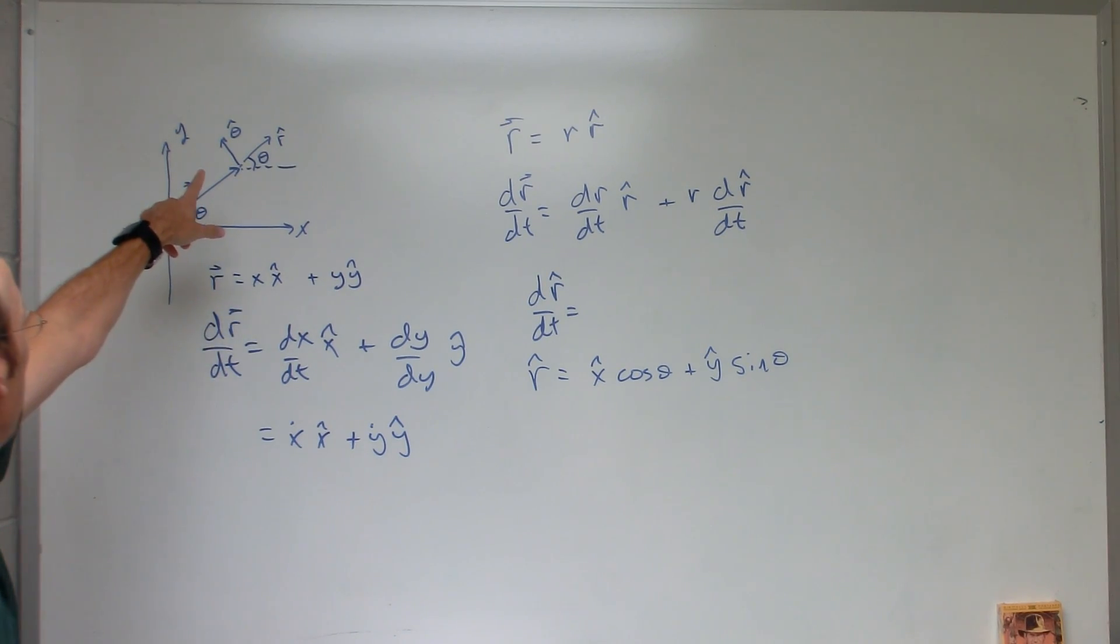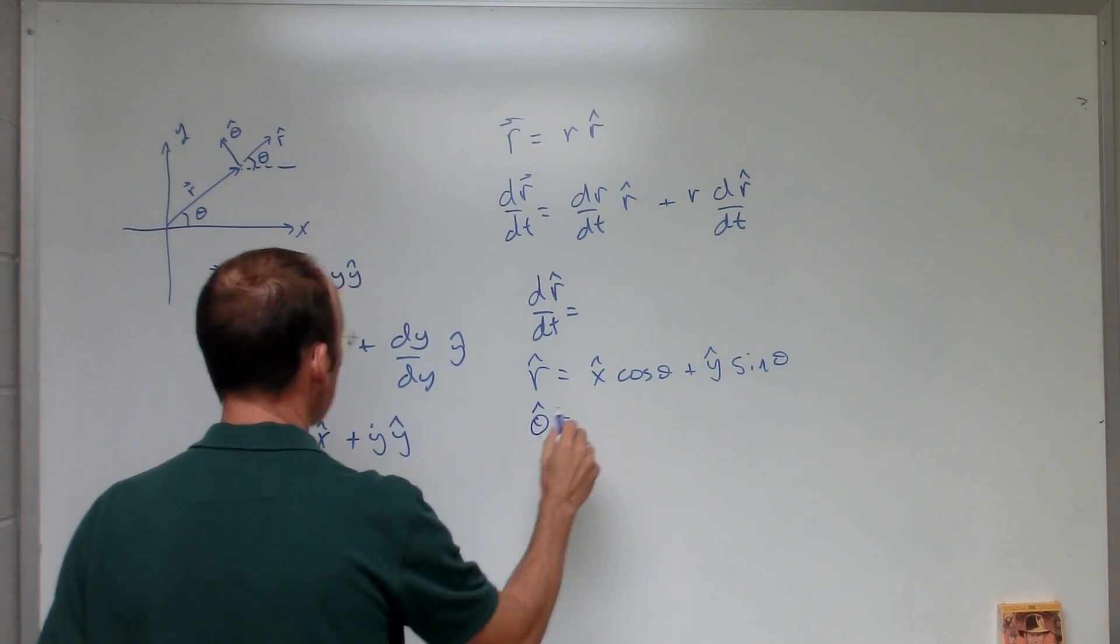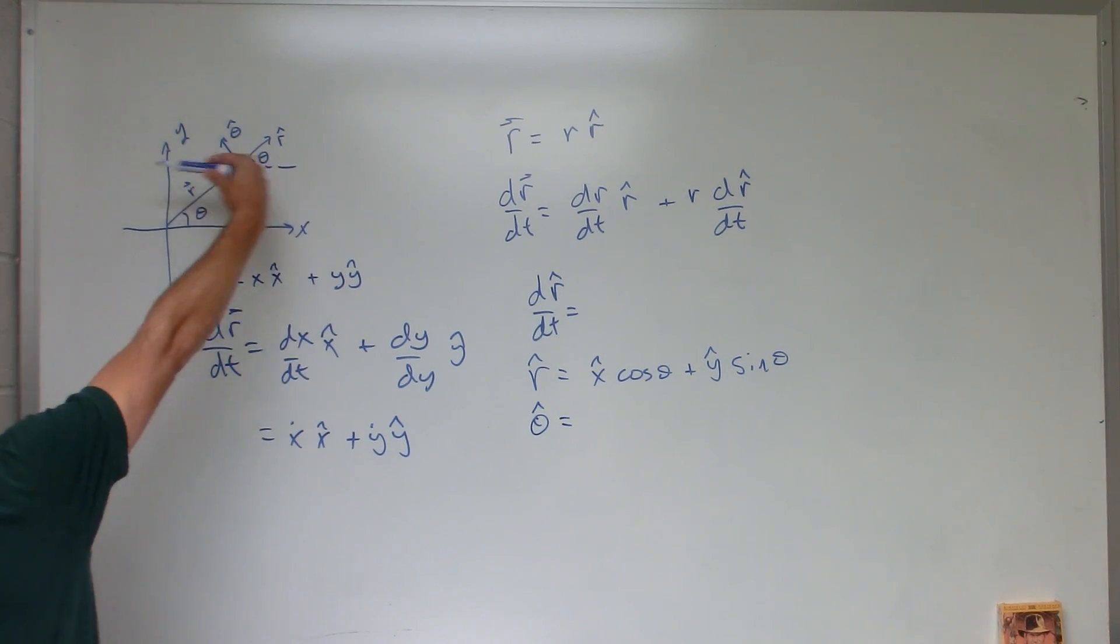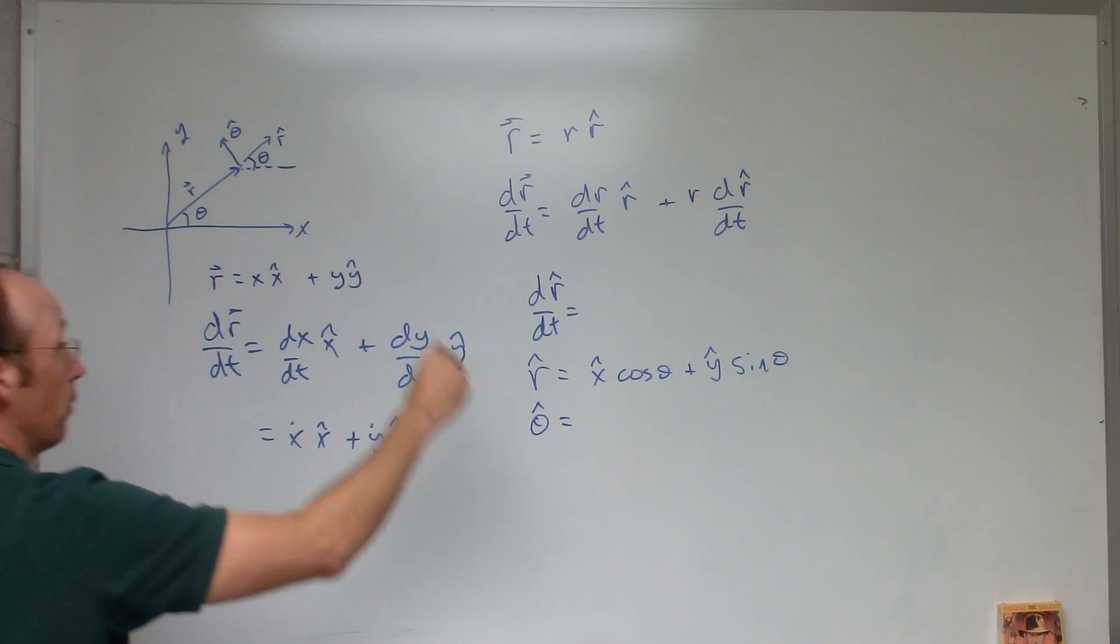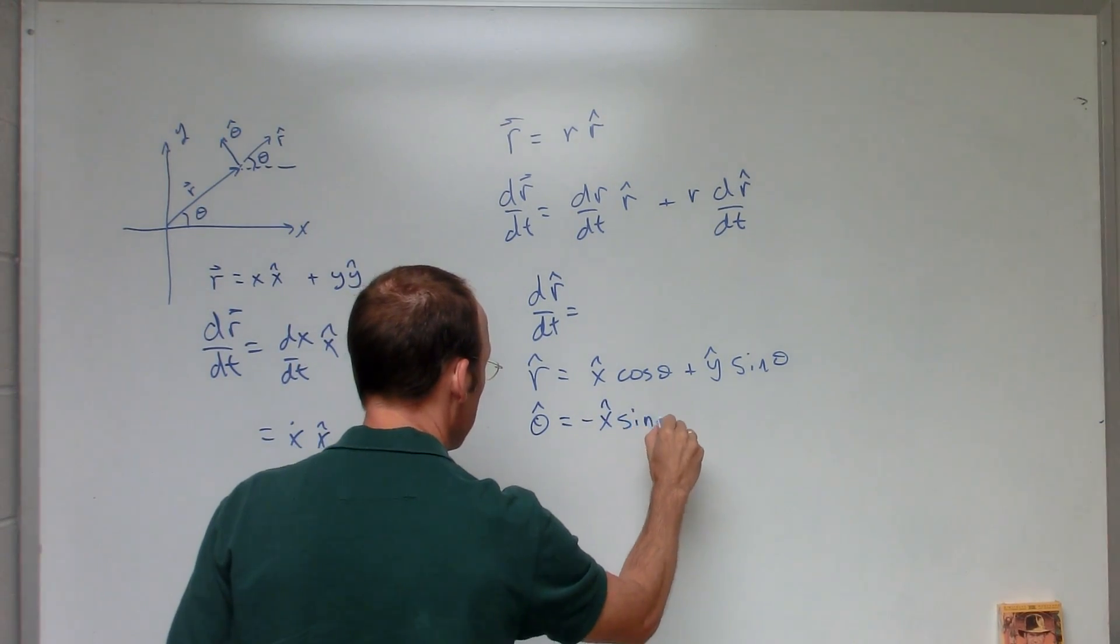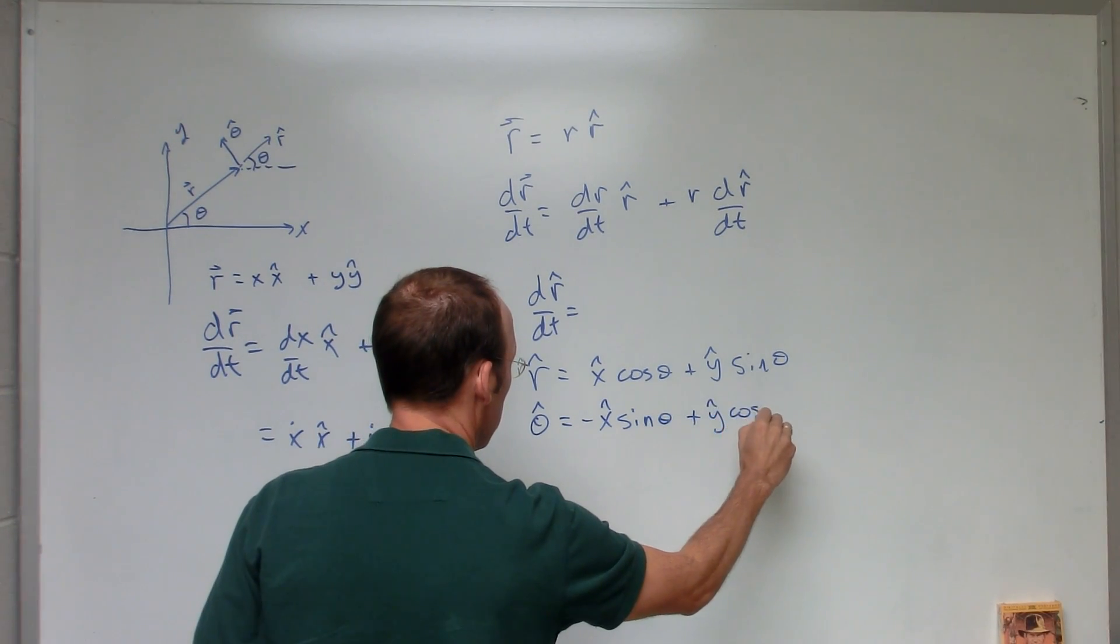Now I can write a unit vector for theta hat in terms of polar coordinates. You can play around with it. You can see its x coordinate is in the negative direction in this case, and it depends on the sine of the angle. So this is actually negative x hat sine theta plus y hat cosine theta.